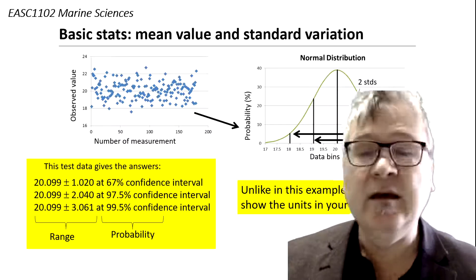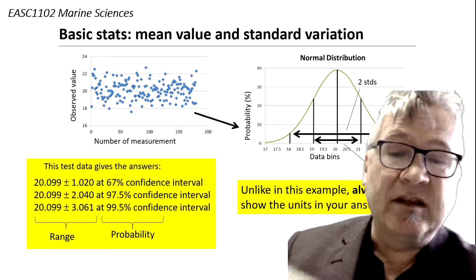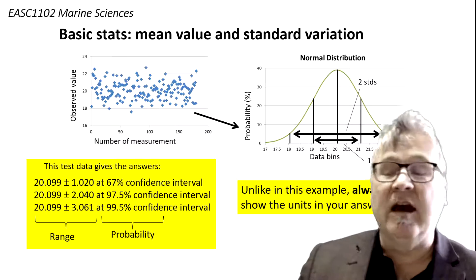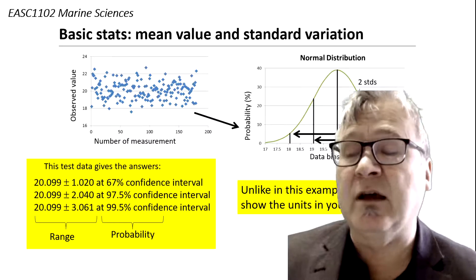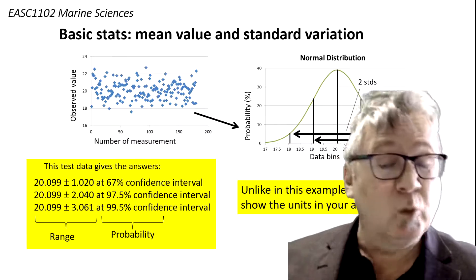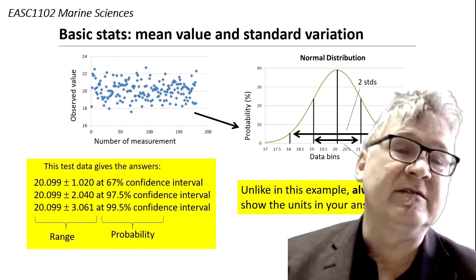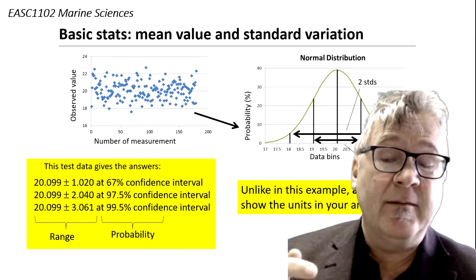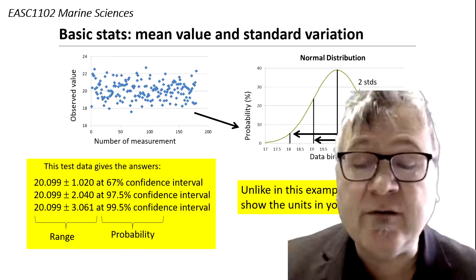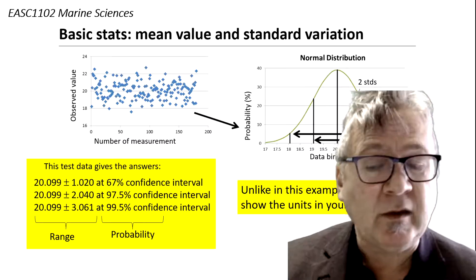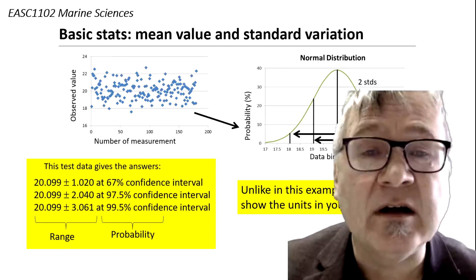So let's just see how that looks like in my example here with all the measurements, the 150 measurements. And you get the answer that the mean value is around 20, so it's actually 20.099 plus minus 1.02 at 67% confidence interval. But the answer changes depending on what confidence interval you choose. So you have a range and a probability part of your answer.